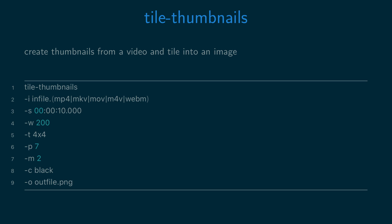The dash C option is used to specify the colour, which you can find by running the Tile Thumbnails script with the dash S option, which will give you a link to the FFmpeg page of all the colours that you can use. The dash O option is used to specify the output filename.